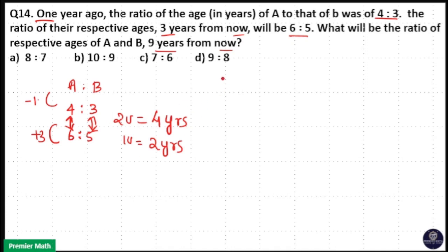That means the ages of A and B 1 year ago was 4 into 2, 8 years and 3 into 2, 6 years. This is 1 year ago age.